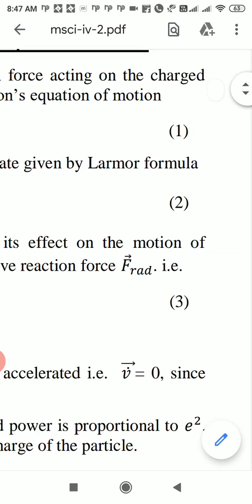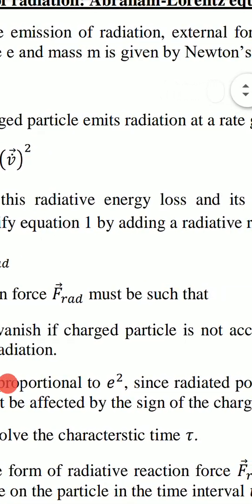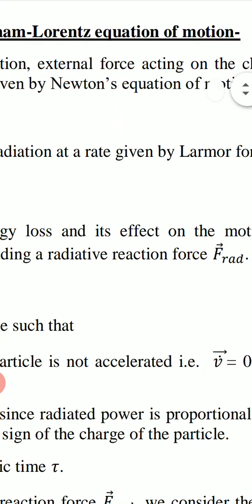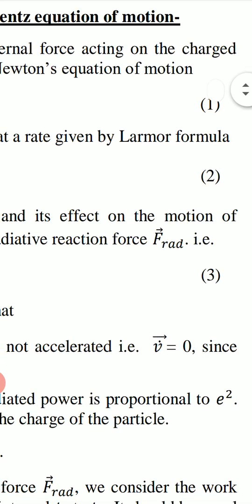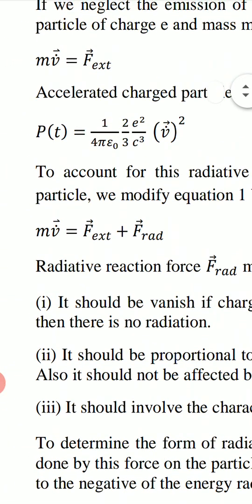To account for this radiative energy loss and its effect on the motion of the charged particle, we modify equation 1 by adding a radiative reaction force F_rad. So the modified equation of motion becomes m v-dot equals F_ext plus F_rad.